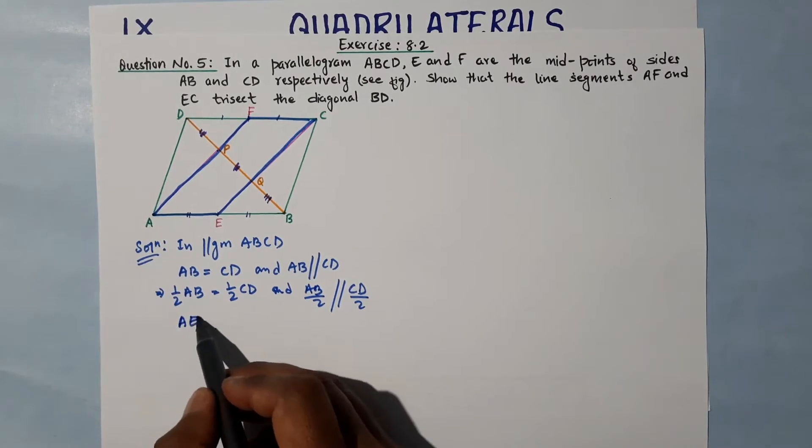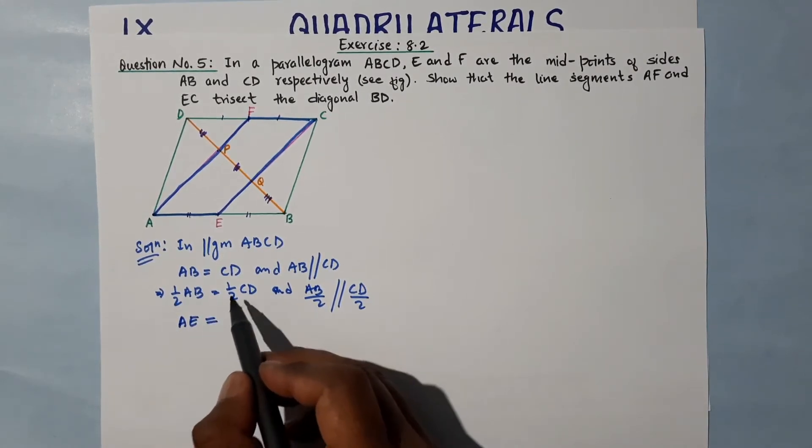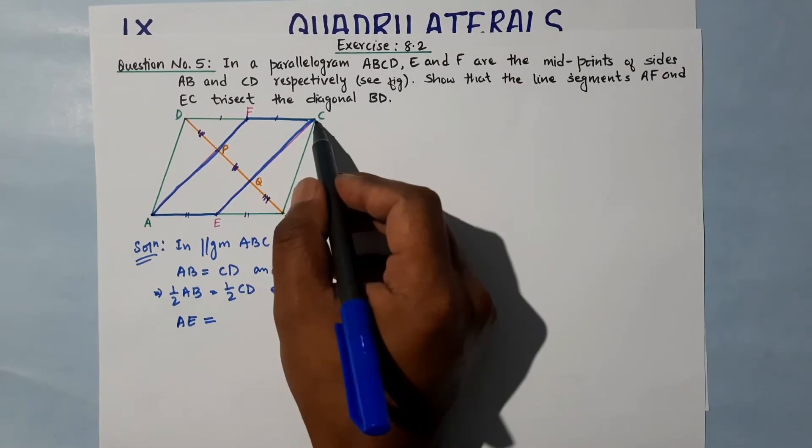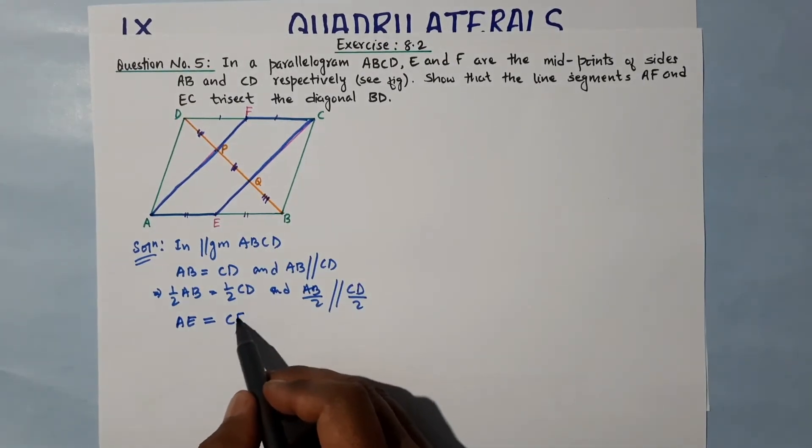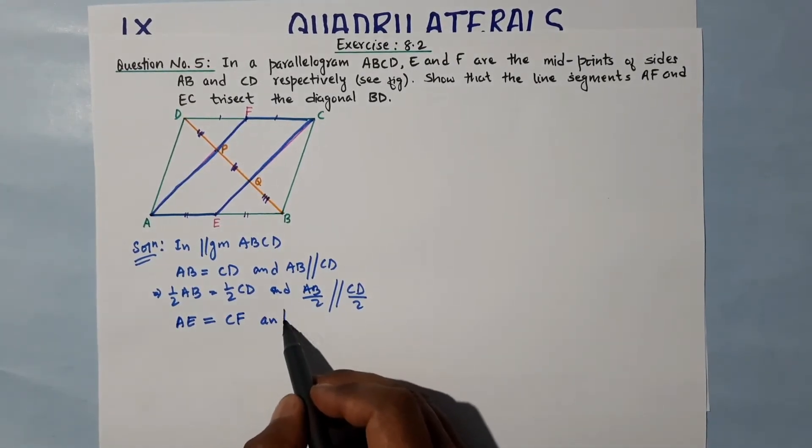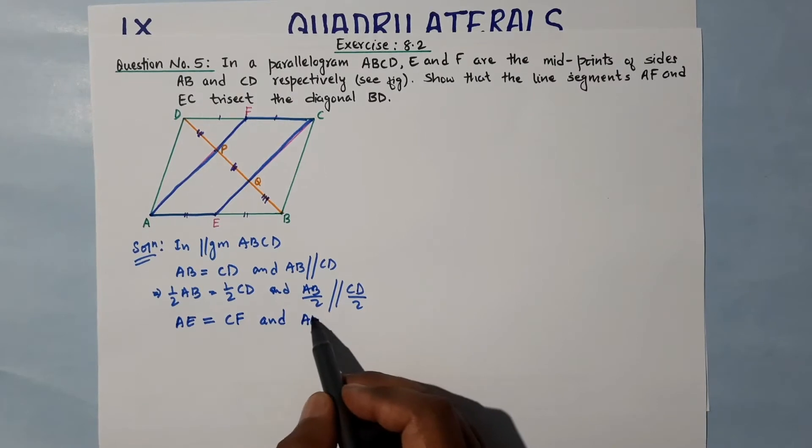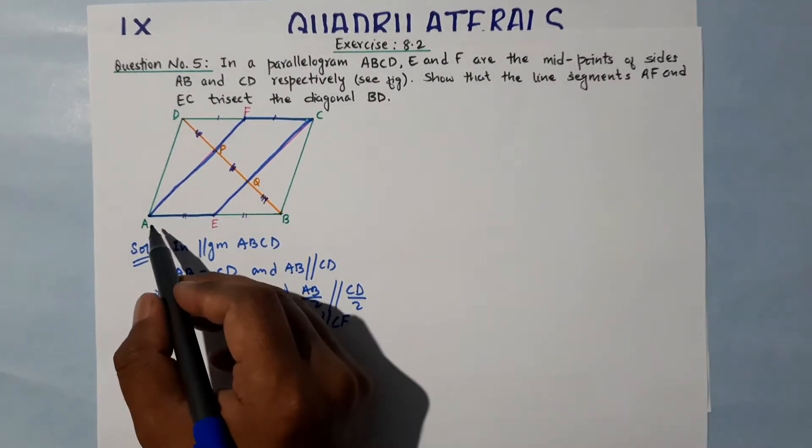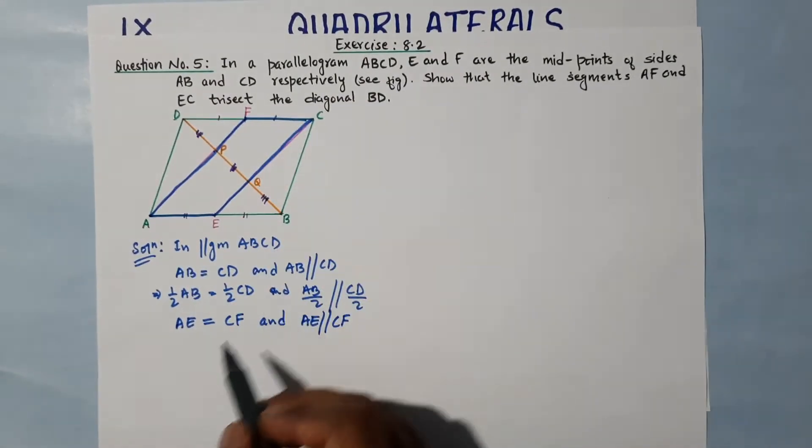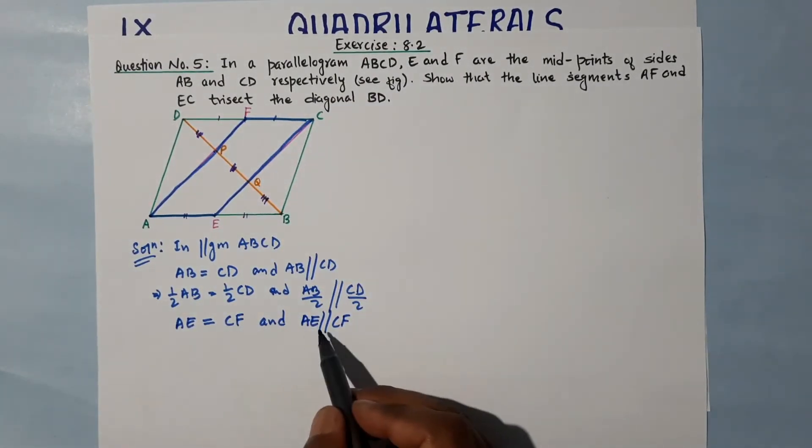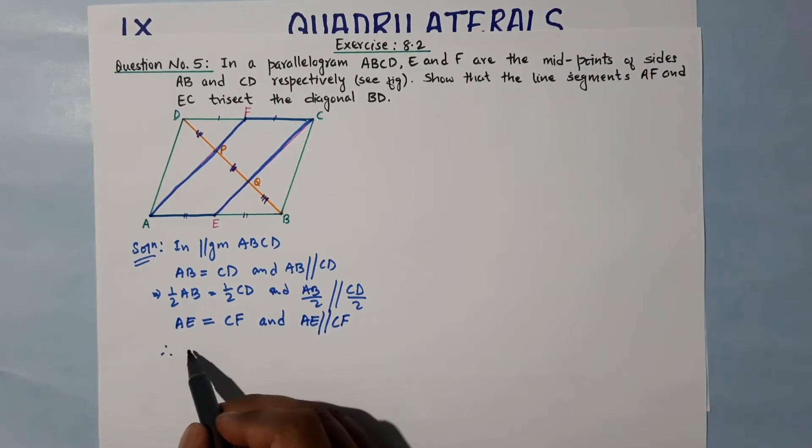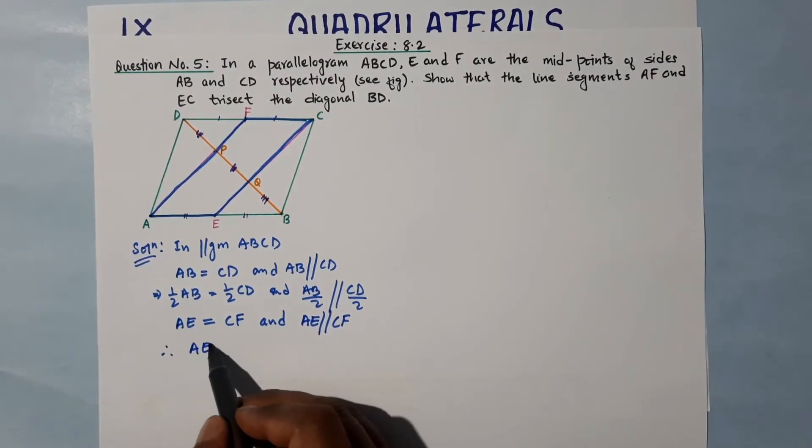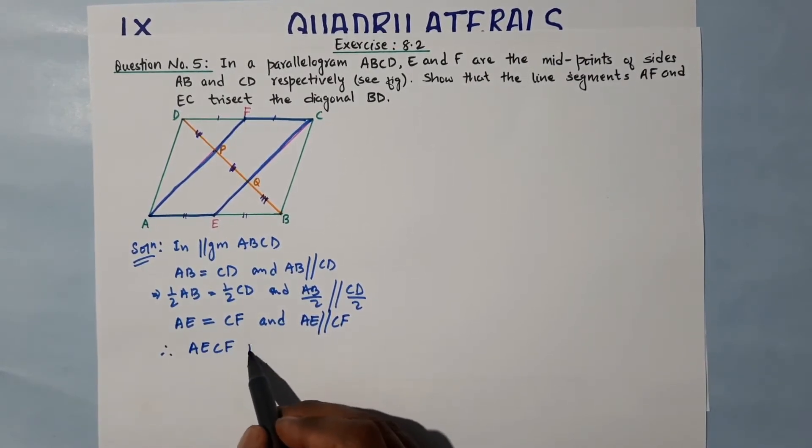...AE is equal to CF, and half of AB means AE is parallel to CF. So that means AE is equal to CF and AE is parallel to CF.